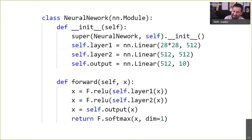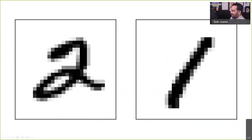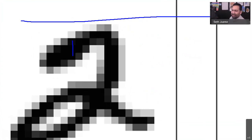Inside each layer, after computing w-transpose-x plus b, we run an activation function over the output to introduce non-linearity, then pass it forward. In PyTorch, this model has an input linear layer, then 512 to 512, then 512 to 10 — because the image is 28x28 pixels so we flatten it. The forward method defines how you pass data through: run activation on layer 1, get x; run activation on layer 2, get x; output x with a softmax to force all answers to sum to one.